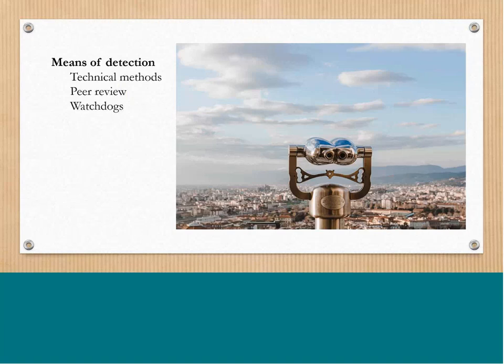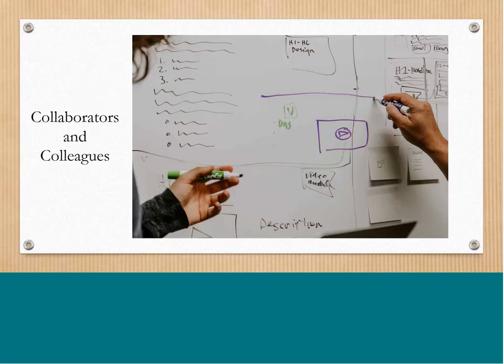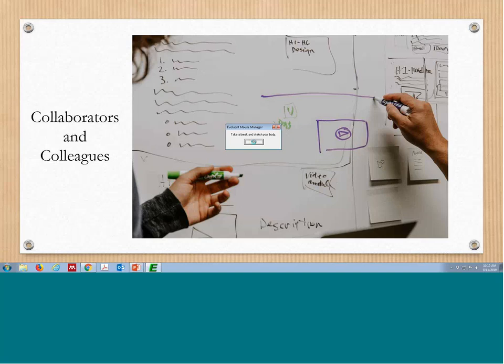How does misconduct come to light? The means of detecting misconduct run from sophisticated algorithms to peer scrutiny. Technical methods include plagiarism detection software, strategies for identifying manipulated images, and statistical analysis of research data. Peer reviewers evaluate manuscripts before publication, and self-appointed watchdogs examine published research. But the primary tools for detection are the alert eyes and ears, the acute minds, and the honorable hearts of people like you and me. Studies have shown that collaborators and colleagues are often the ones who bring misconduct to light, because they understand science best and live with the research day-to-day. They are in the position to notice when something seems awry.